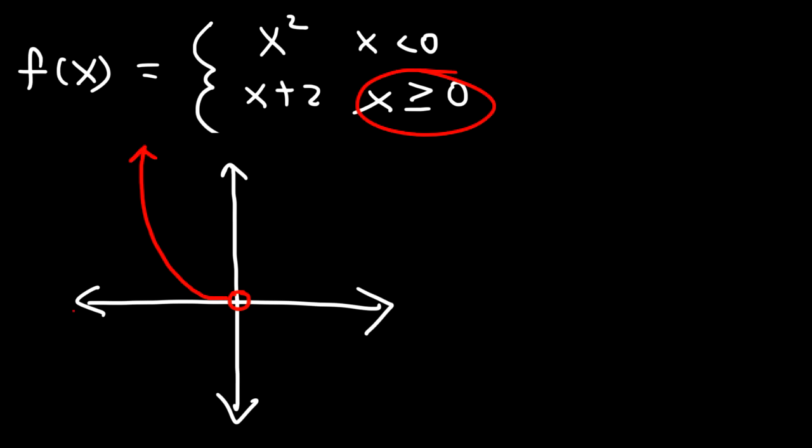Now let's move on to the next example. Let f of x equal x squared minus 3 when x is less than 2, and 4x minus 7 when x is greater than or equal to 2. Is the function continuous at x equals 2?